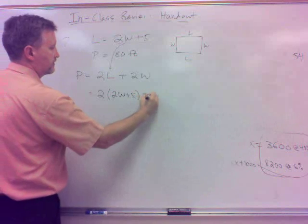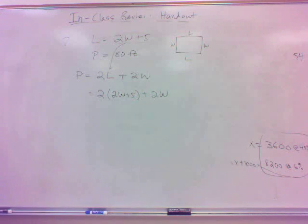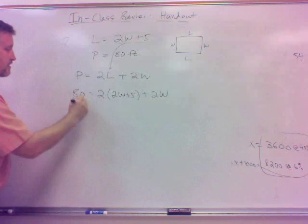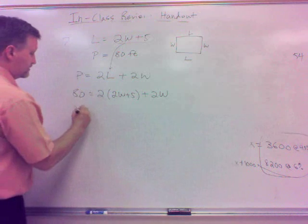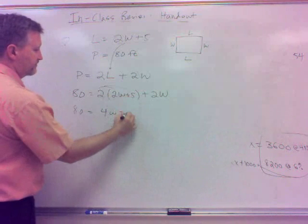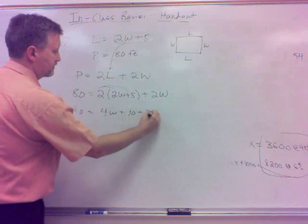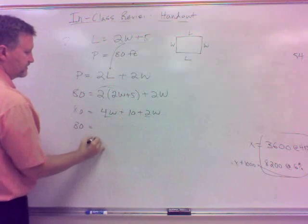Alright, well, this is kind of like a substitution, isn't it? I know the L is 2W plus 5, so can't that go in place of L? Two times the 2W plus 5, plus the other 2W, and then we know the perimeter is 80. So that's our formula right there. Two times 2W plus 5, plus 2W, equals 80. With me on that?